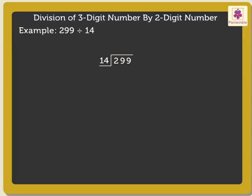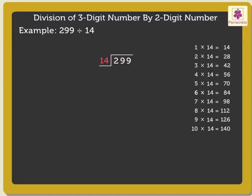Look, here, as the divisor is 14, we get the nearest product of 29 as 28. Therefore, we write 2 in quotient above 9 in the tens place and 28 under 29. Now, subtract 28 from 29, which is equal to 1. Lastly, bring down the next digit. That is 9.